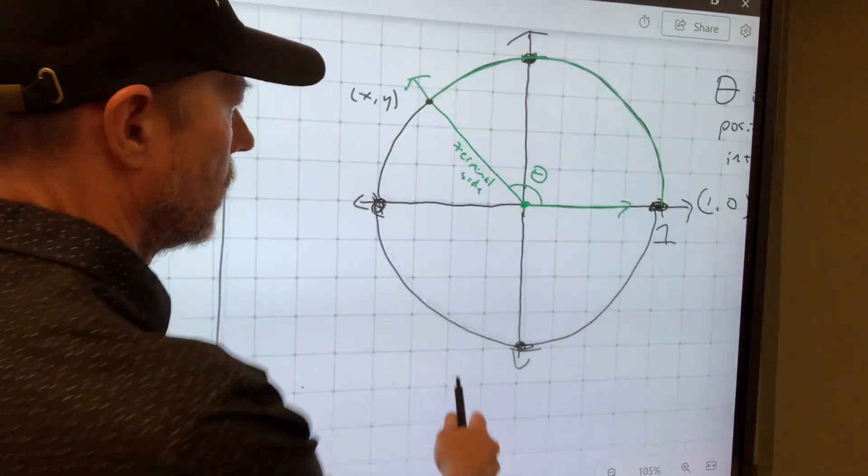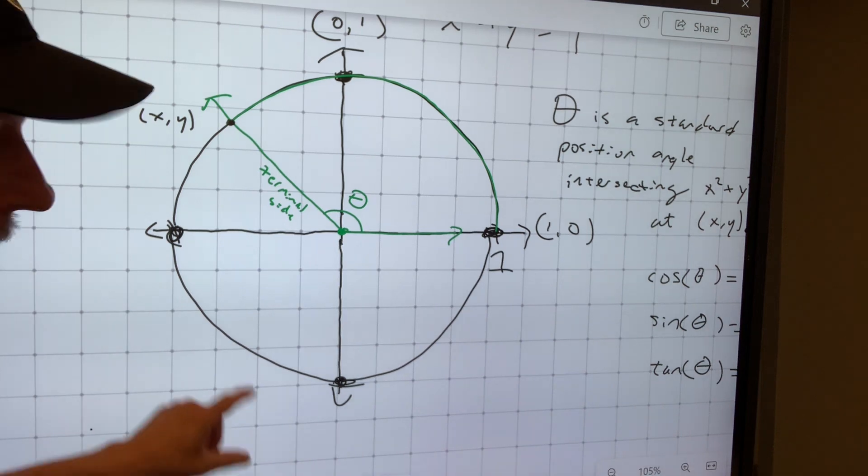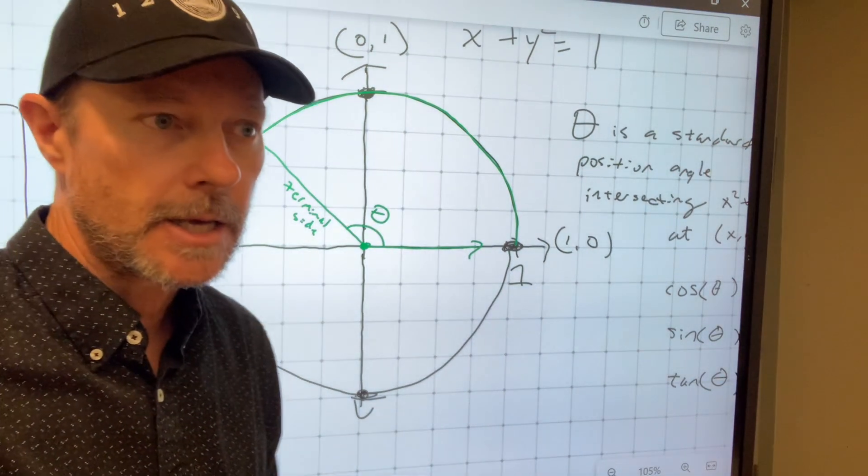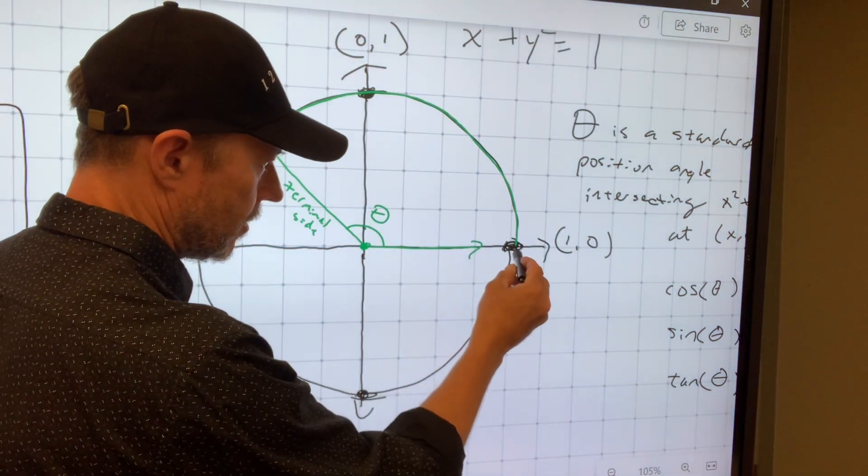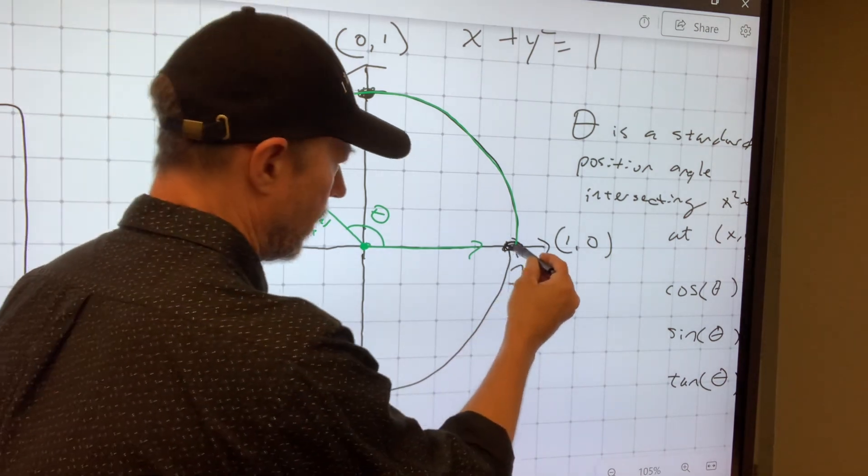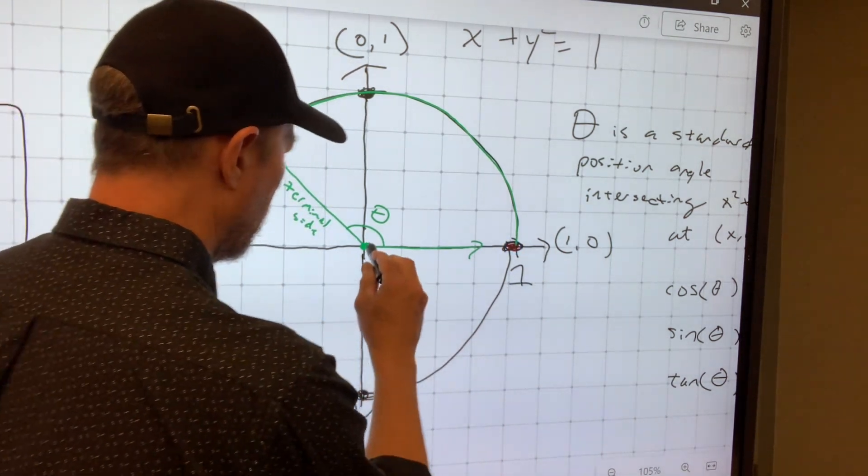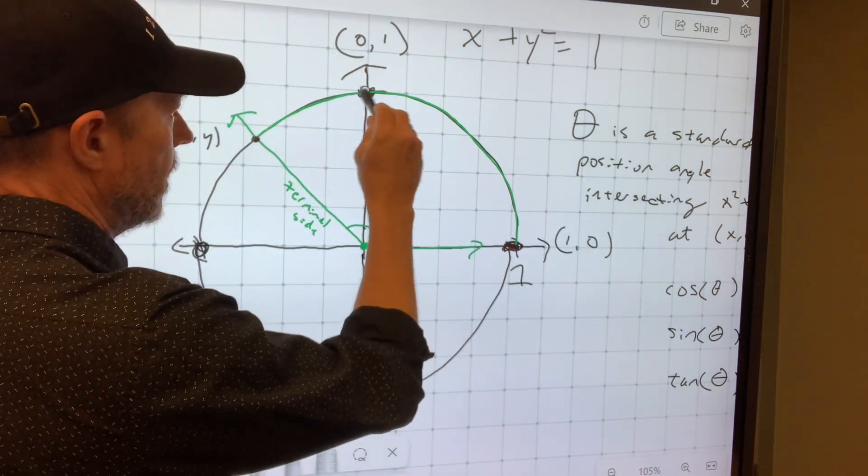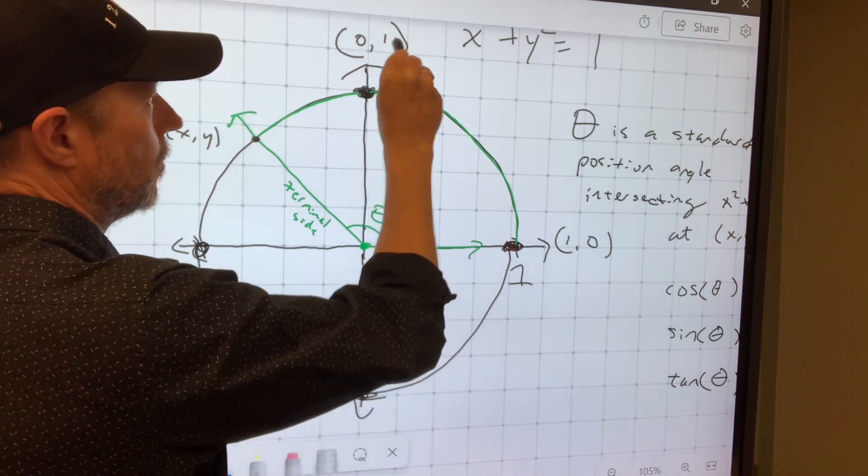So we have here a unit circle. Let's make sure we get it in the screen. It's a unit circle because the radius is one unit, meaning the distance from the center out to the edge of the circle is one unit. So this point here that's on the circle would be over one unit and up zero. And this point here on the unit circle would be over zero units and up one. So that coordinate is (0,1).